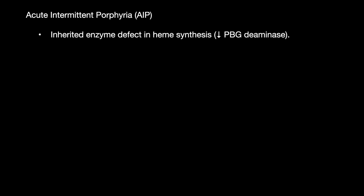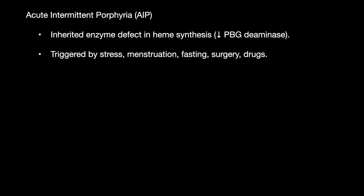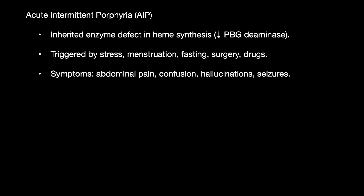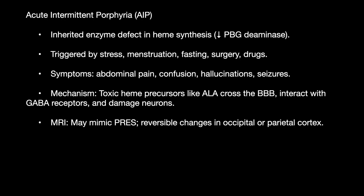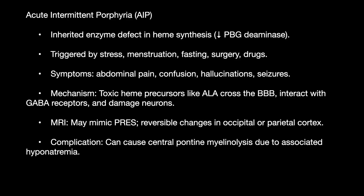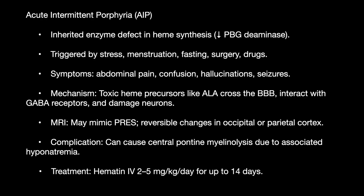Acute intermittent porphyria is an inherited enzyme deficiency in heme synthesis, triggered by stress, menstruation, fasting, surgery, or drugs. Symptoms are abdominal pain, confusion, hallucinations, and seizures. The mechanism involves toxic precursors like ALA crossing the blood-brain barrier and interacting with GABA receptors to damage neurons. MRI can mimic PRES with reversible changes in the occipital and parietal cortex. It can also cause central pontine myelinolysis due to associated hyponatremia.